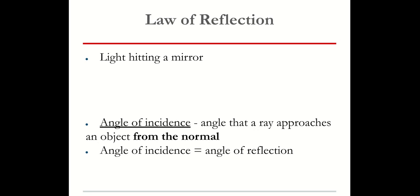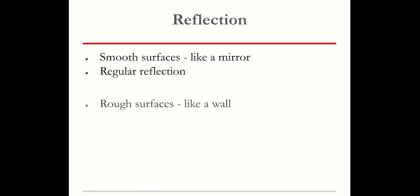Now this does have some consequences. I will share these slides online. So smooth surfaces like a mirror will reflect, you get regular reflection, but a rough surface, like a wall, it tends to take the light rays and it tends to scatter them in such a way where you're not going to be able to get a nice image or a clear image. That's called diffuse reflection.